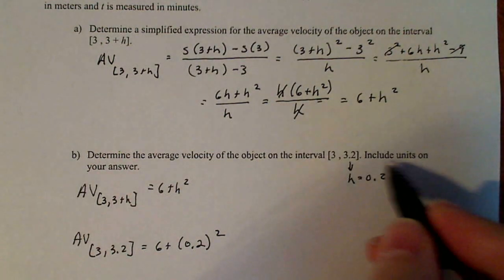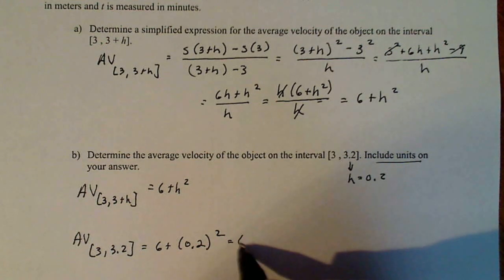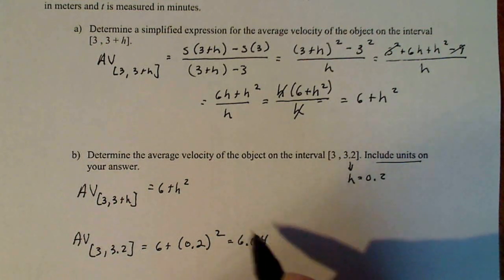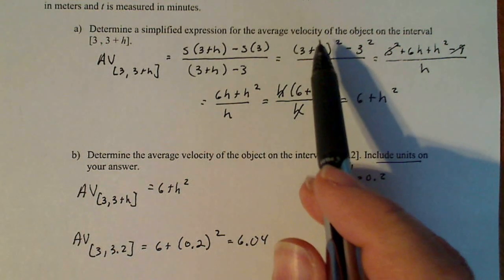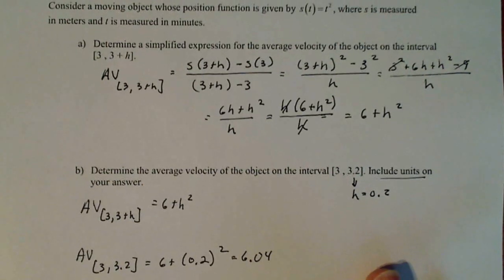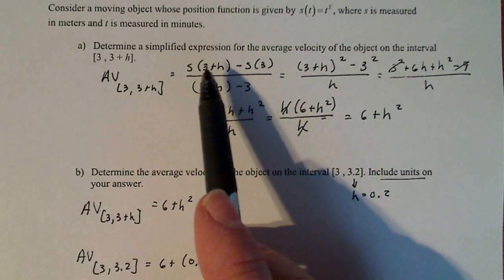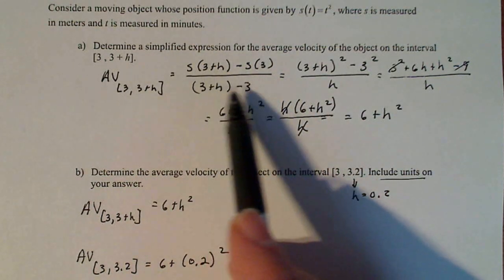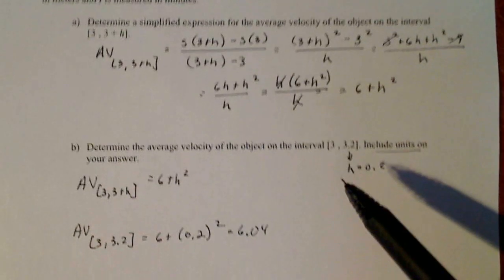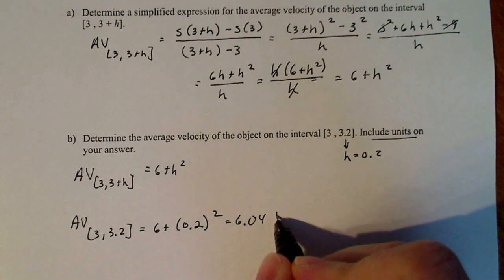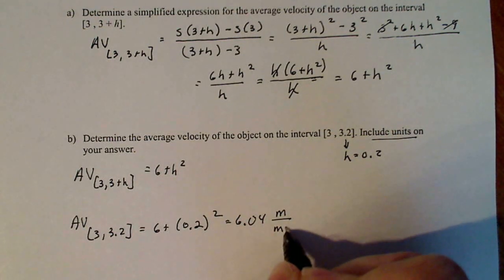Now this says include units on your answer, 6.04. Now I know from up here, it says s is measured in meters. So the numerator here is in meters. t is measured in minutes. So it's meters per minute. So it's 6.04 meters per minute.